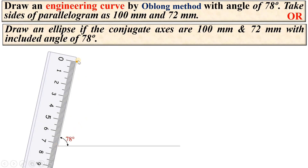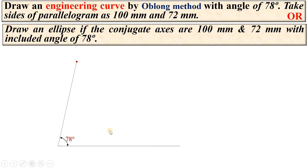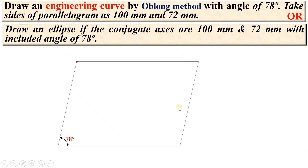Mark exactly at 72 mm. These are now the two sides of the parallelogram. You can complete the parallelogram with the help of the roller scale. Set the roller scale and draw the parallel line to this side. Similarly, set the roller scale and draw the parallel line to the other side. So you can complete the parallelogram.